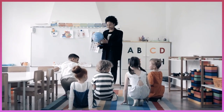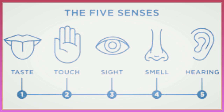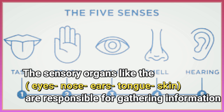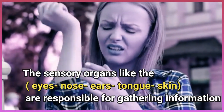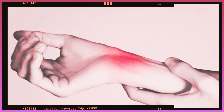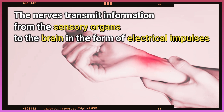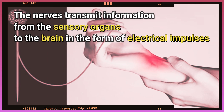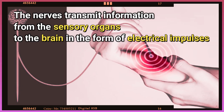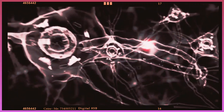What will happen when the sensory organs receive information from the environment? The sensory organs — the eyes, nose, ears, tongue, and skin — are responsible for gathering information. When the sensory organs receive information from the environment, the nerves transmit that information from the sensory organs to the brain.